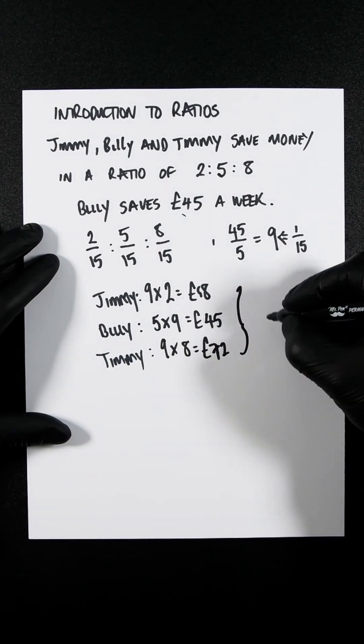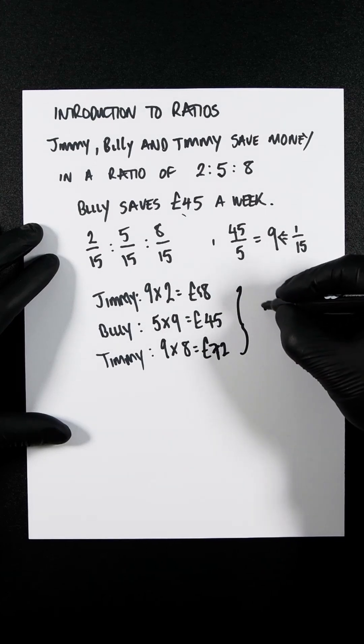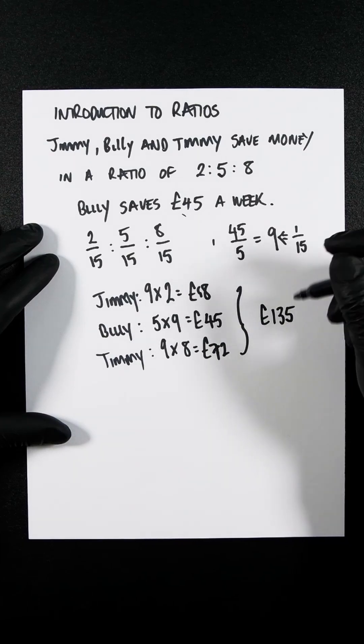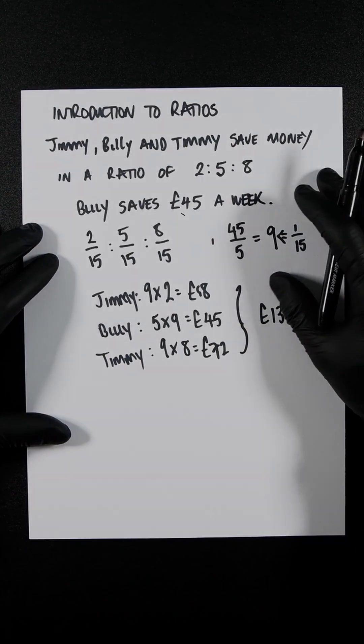So the total saved by all of these boys is 135 pounds. So the steps are, find out what one part is equal to, and then multiply it across.